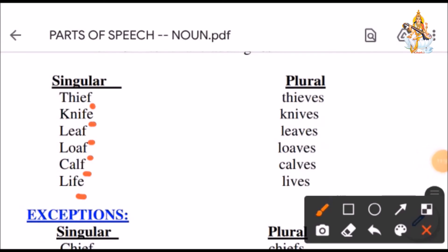Here we have nouns thief, knife, leaf, loaf, calf, life. They either end in F or FE. Now, we have to convert F, FE into V and add ES. So, thief becomes thieves, knife becomes knives, leaf becomes leaves, loaf becomes loaves, calf becomes calves and life becomes lives.